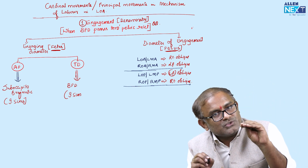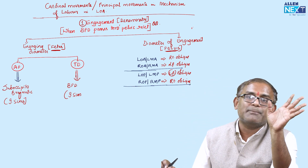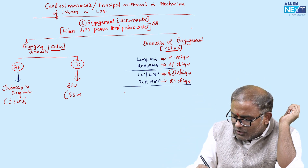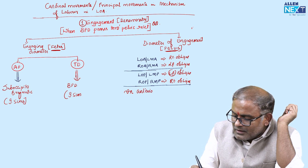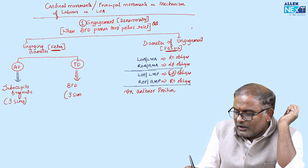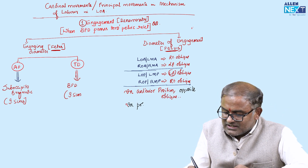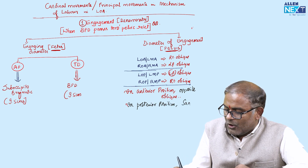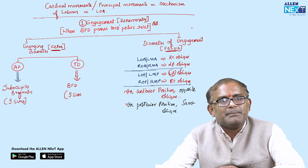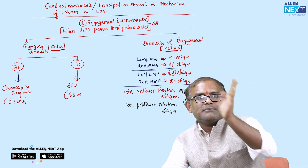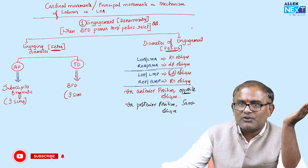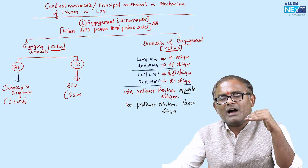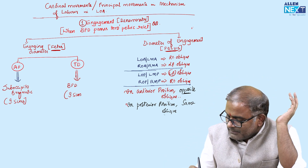Take-home message: in anterior position it is always the opposite oblique, and in posterior position it is the same oblique. LOA = right oblique, LMA = right oblique, ROA = left oblique, RMA = left oblique. LOP = left oblique, LMP = left oblique, ROP = right oblique, RMP = right oblique. In posterior position, same oblique.